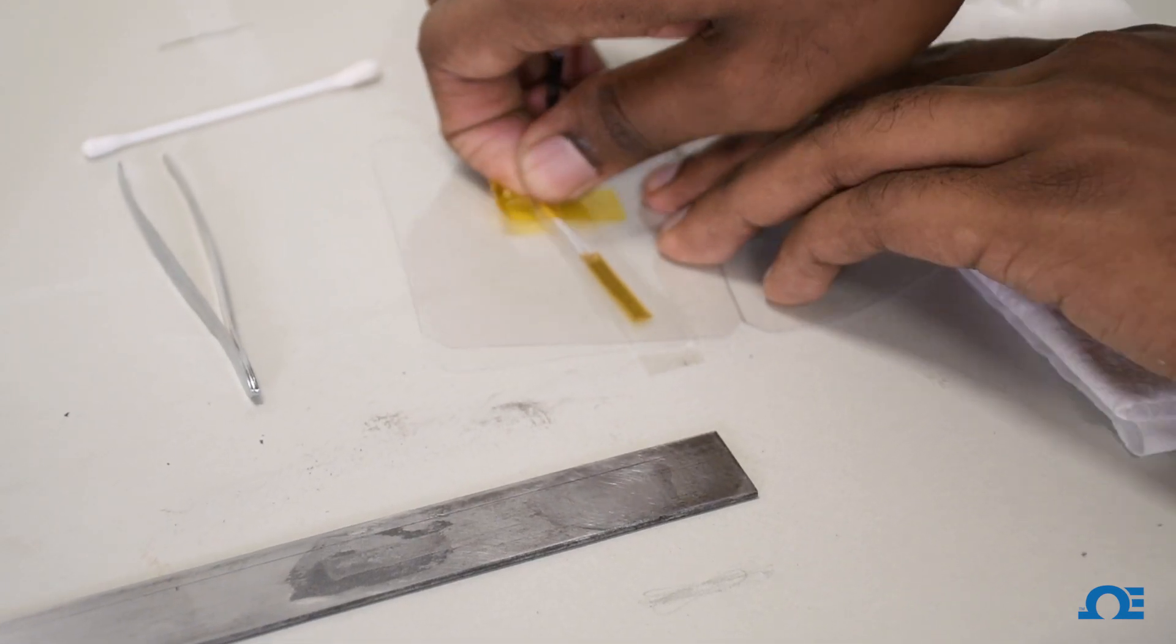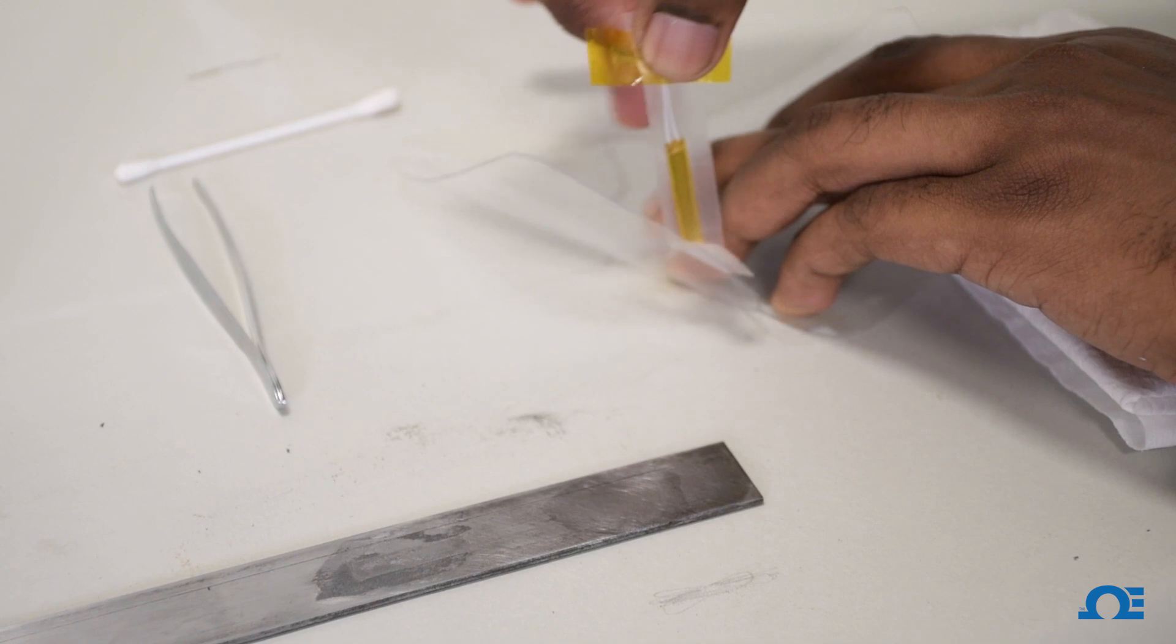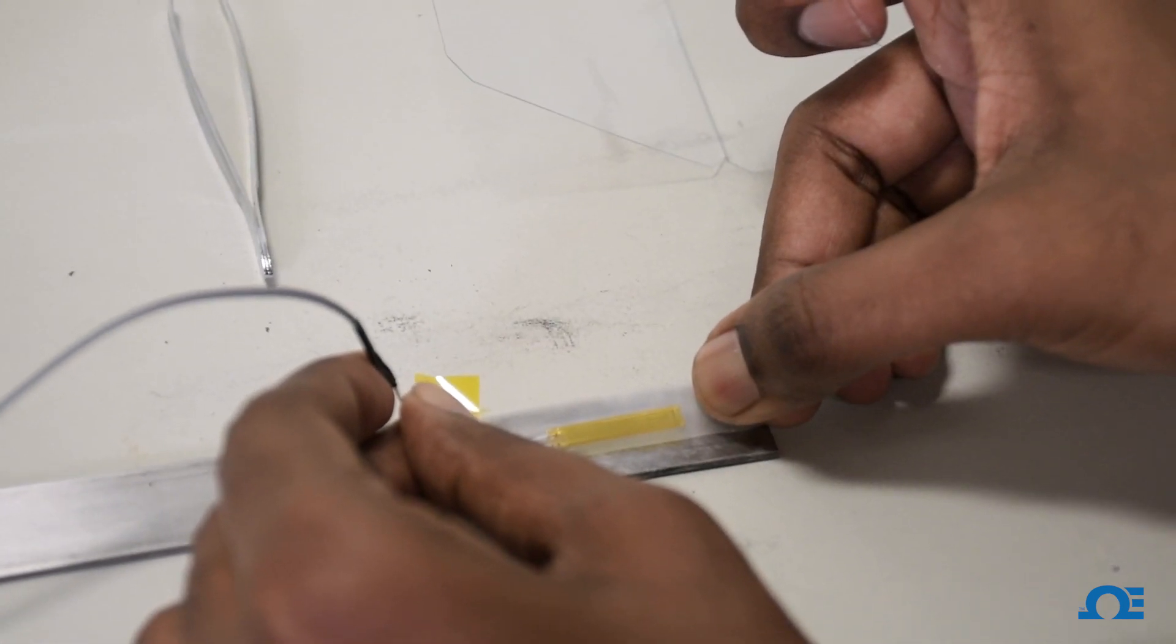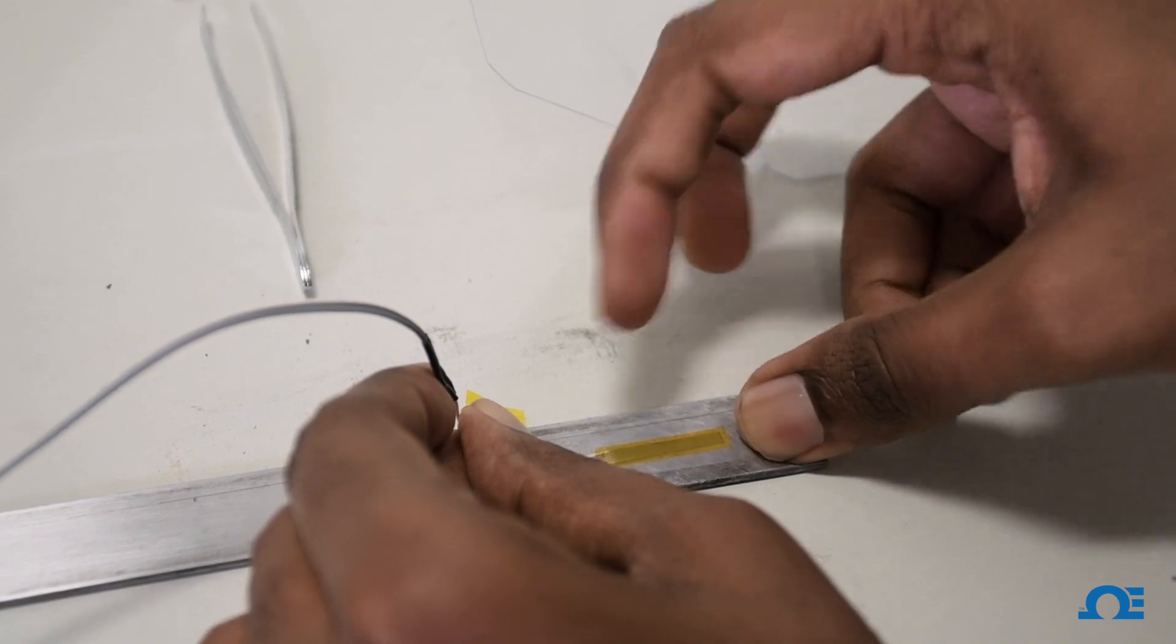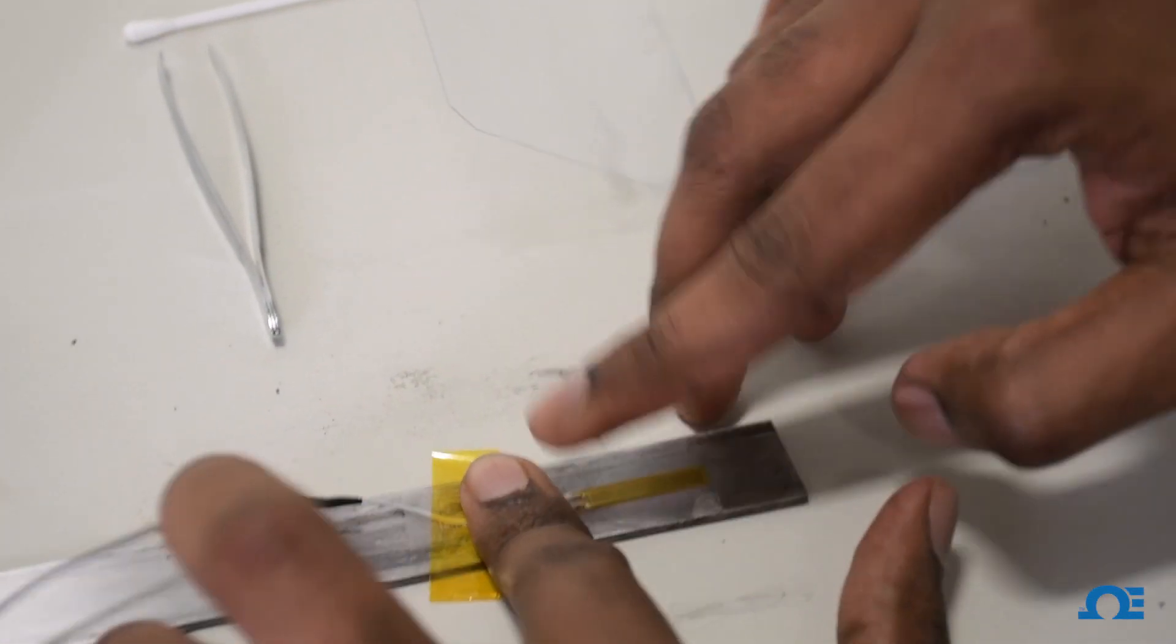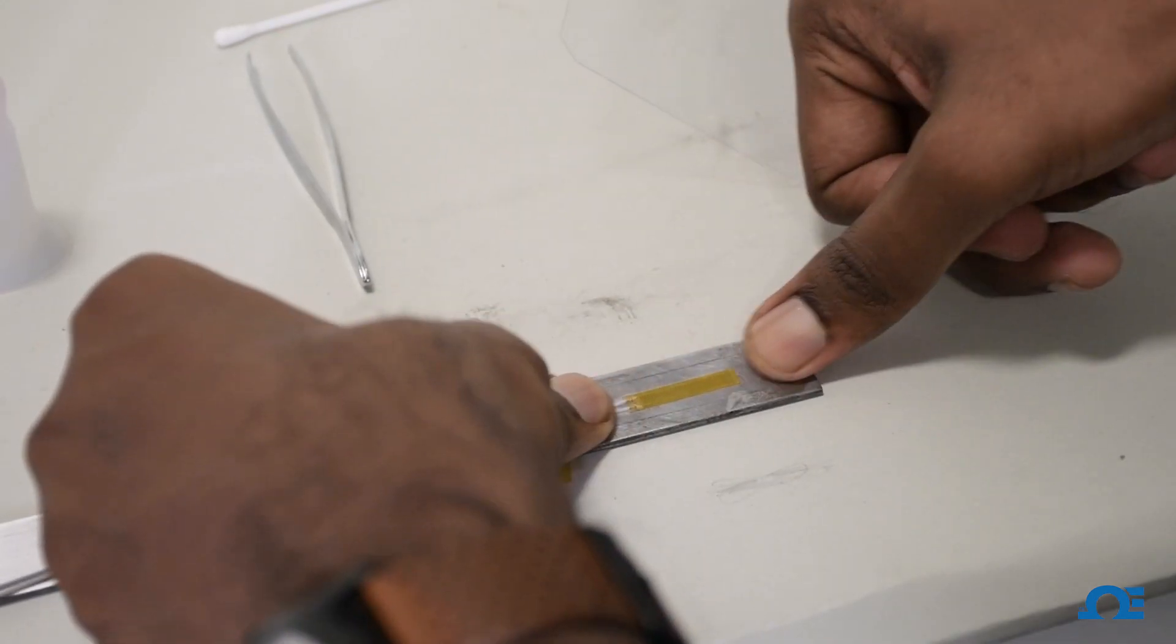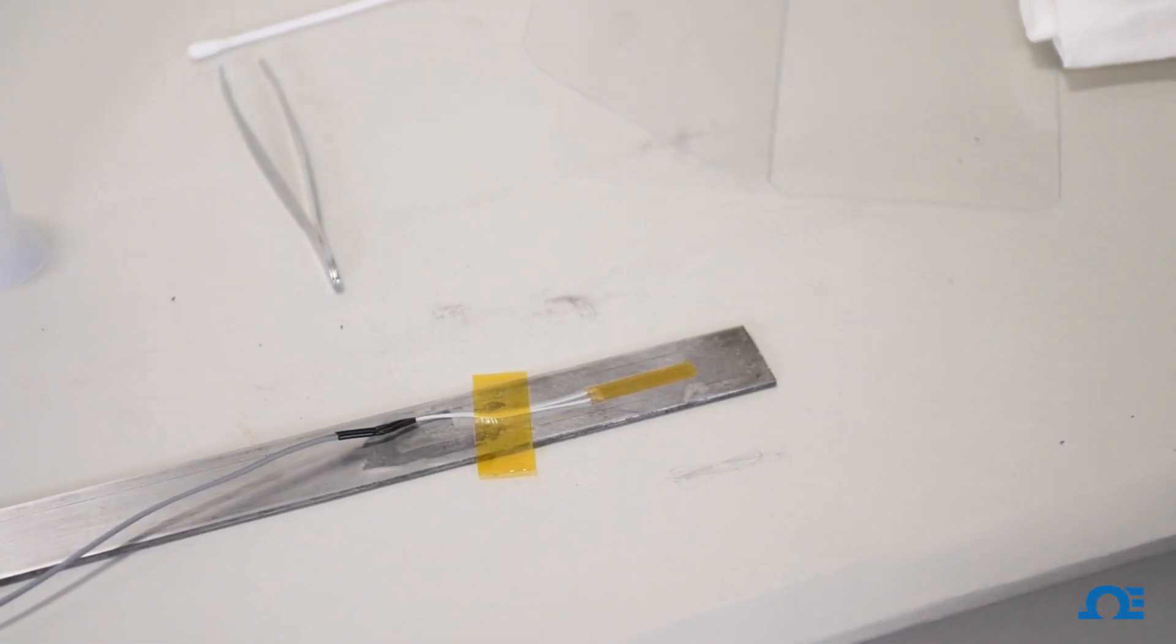Now remove the strain gauge from the cover. You might want to mark the surface where you want to apply the strain gauge. Just place it over there. Apply a small amount of pressure so that the adhesive cures instantly. Press and hold it for a few seconds. Let it stay for a few seconds for the adhesive to dry out.